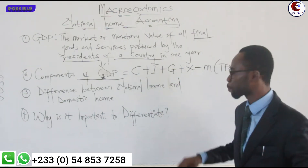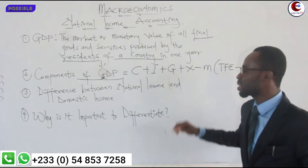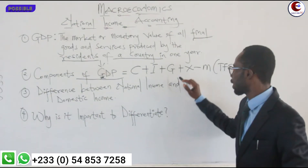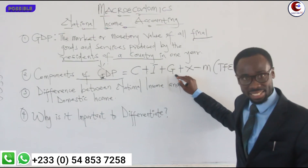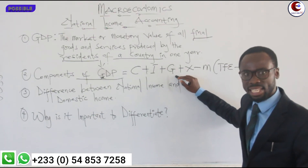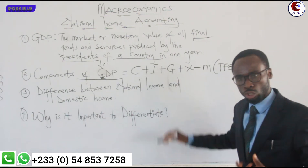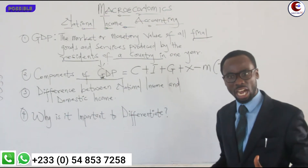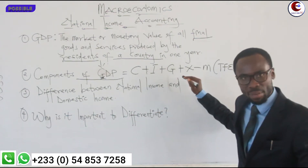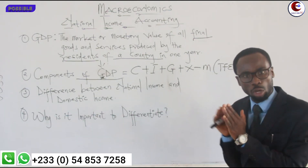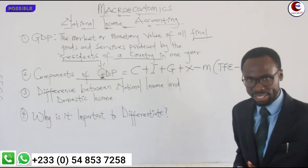The next component is government spending, or government expenditure. Government expenditure is different from government purchase — government purchase is just a portion of government expenditure. When you see 'government purchase' in a question, make sure to add it to all other items of government expenditure so that you get one total figure for government expenditure.